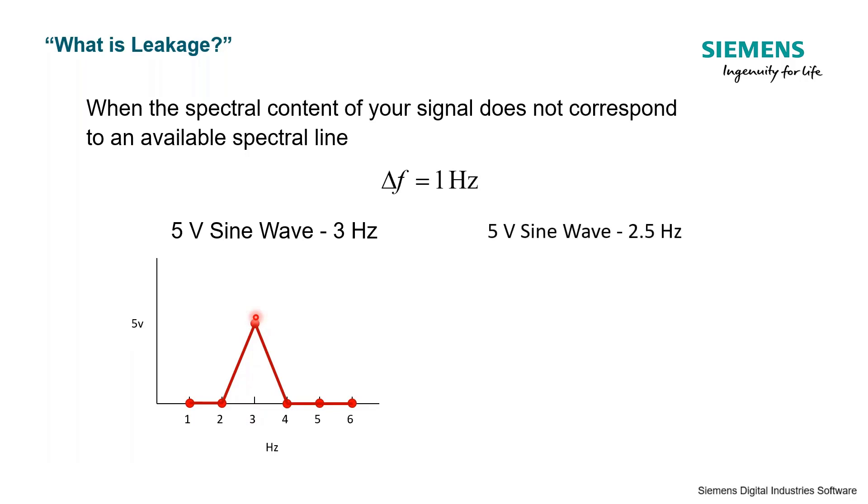Now what if we have the same delta F, still one hertz, but now we have frequency content at 2.5 hertz, but we do not have a line, a spectral line at 2.5. So what do you think is going to happen there?